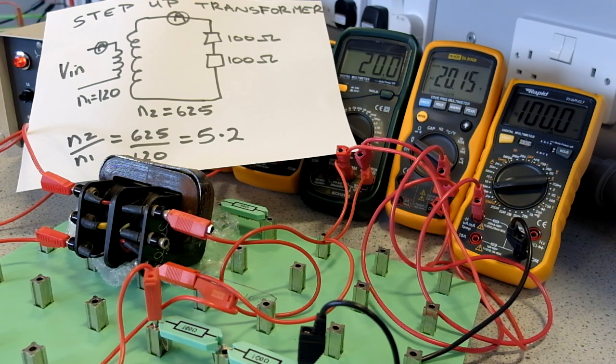The ratio of turns gives us 5.2, so the output voltage should be 5.2 times the input voltage.